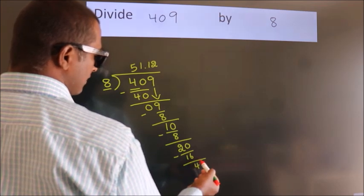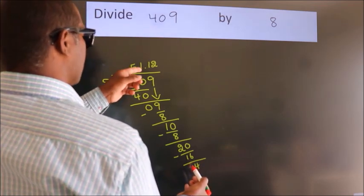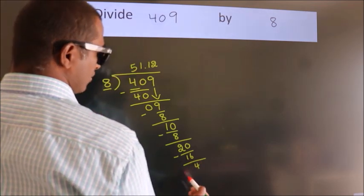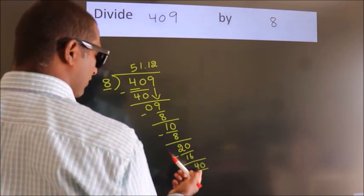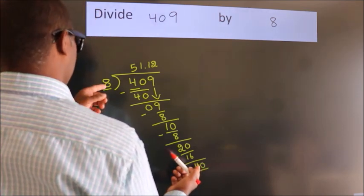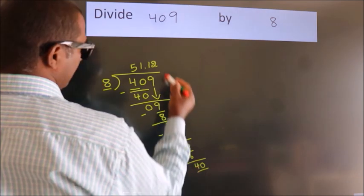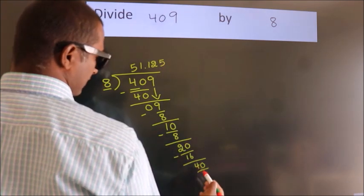After this, we already have the decimal. So directly take 0. So, 40. When do we get 40? In 8 table. 8 fives, 40.